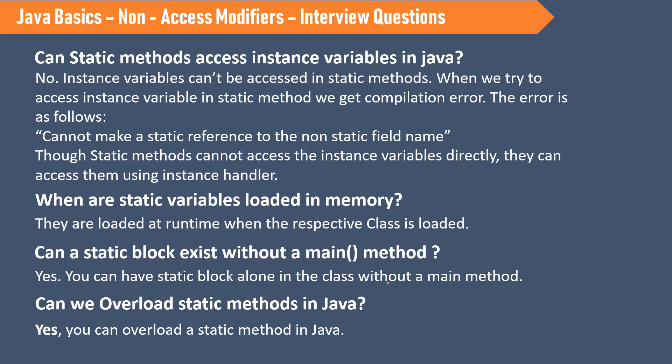Can static methods access instance variables? We cannot access them directly. To access an instance variable, we need to create an object. If we try to access them directly, we will get a compilation error: 'cannot make a static reference to a non-static field name'. So to access non-static fields from a static method, we have to create an object. Static methods can access instance variables using an instance handle. Static variables are loaded into memory whenever the class is loaded by the class loader subsystem.